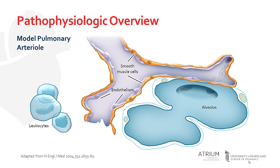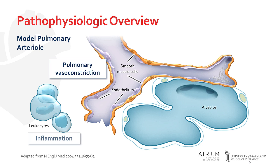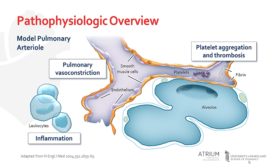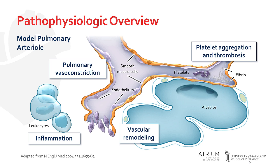Several processes are implicated in the pathophysiology of PAH, as illustrated in this example pulmonary arteriole. An imbalance of physiologic vasoconstrictors and vasodilators leads to net vasoconstriction of the pulmonary smooth muscle. We'll return to this concept in a few moments when we review the disease-modifying therapies. Additionally, inflammatory mediators, such as leukocytes and other components of the immune system, are also often involved. Platelet aggregation and thrombosis may occur as a consequence of alterations in physiologic blood flow or due to imbalances in normal coagulation pathways. Finally, over the long term, these insults can cause pathologic changes to the structure of the vascular smooth muscle, a process often referred to as remodeling.